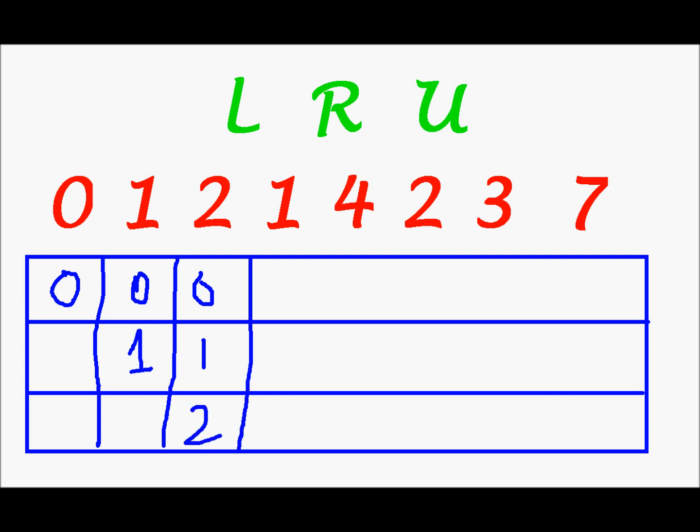Next we need 1 and 1 already exists in these frames. So this is a hit. 0, 1 and 2.